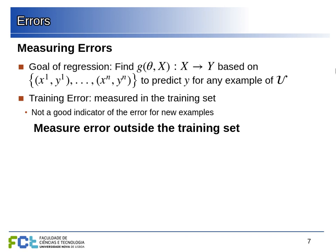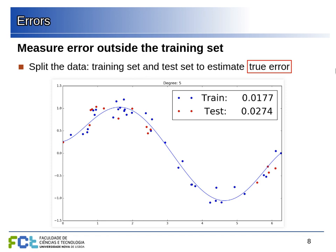To estimate how our hypothesis will perform outside the training set, we need to measure the error outside it. We have a dataset where we know both x and y values. Instead of using all of it to adjust parameters, we split the data at random. We use the blue dots for training — adjusting parameters to obtain the best hypothesis for that training set — and leave the red dots out, so we can measure the error outside the training set.